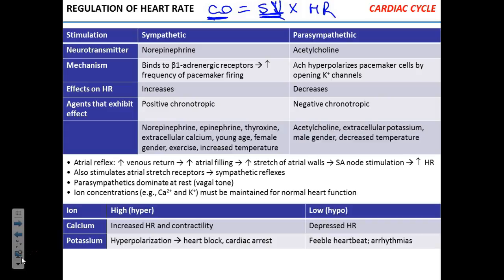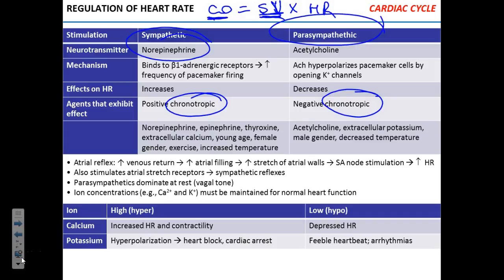What regulates heart rate? The chemicals that can regulate heart rate are called chronotropic. The ones that regulate the force of contraction are called inotropic because it's about calcium ions. The ones that regulate the rate are chronotropic because it's about timing. Positive chronotropic example: norepinephrine. Sympathetic regulation has positive chronotropic effects — it increases heart rate. Parasympathetic has negative chronotropic effects.